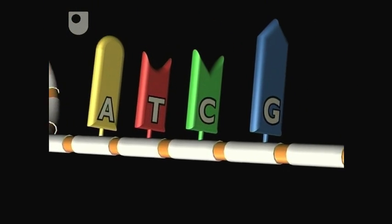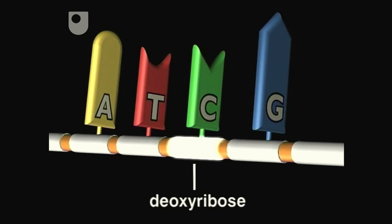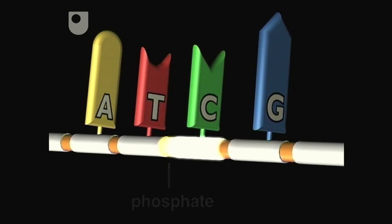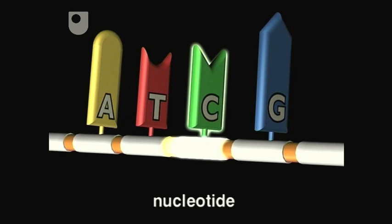Each unit contains a sugar, deoxyribose, a phosphate group, and a base. Together, these form a nucleotide.